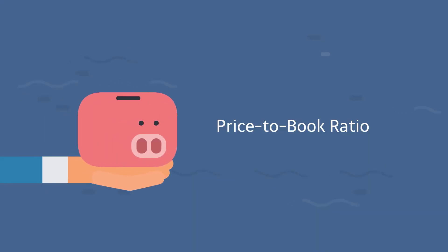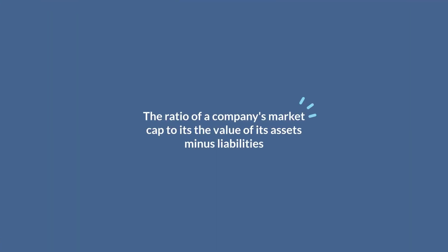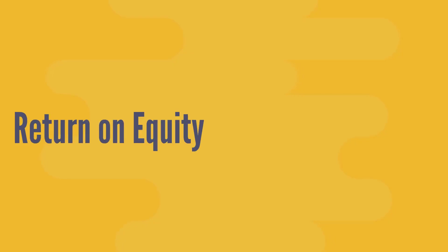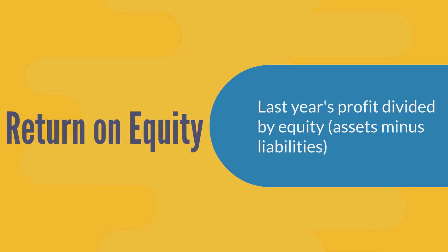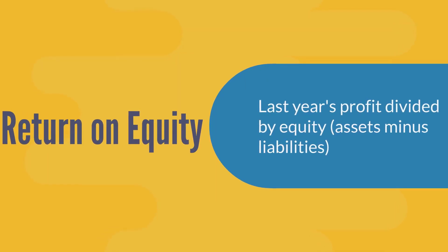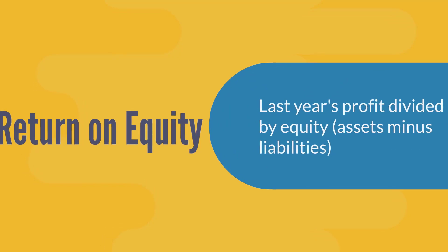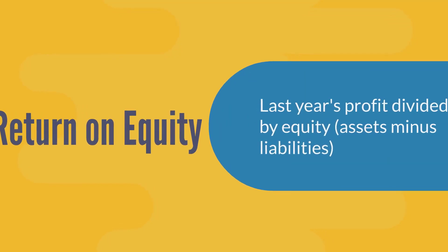Price to book ratio: the ratio of a company's market cap to the value of its assets minus liabilities. Return on equity: last year's profit divided by equity, which is assets minus liabilities.